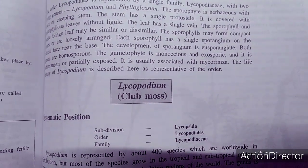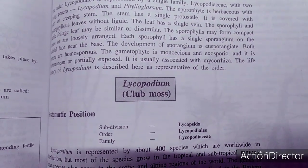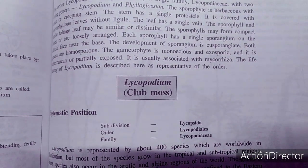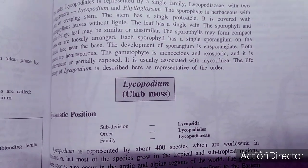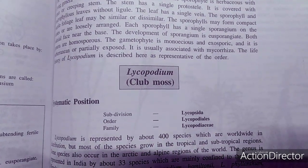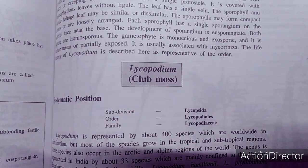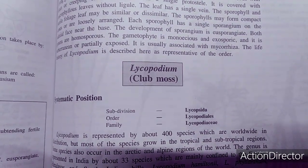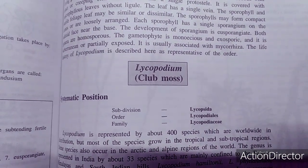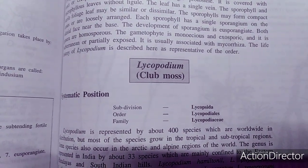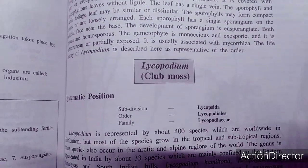The sporophyte has vascular tissue. This is a Lycophyta because the sporophyte consists of stem, root, as well as leaves. The leaves are very small in comparison to the stem, so this is a microphyllous condition. Each sporophyll has a single adaxial sporangium, and sporophylls are borne in the strobilus. It is a Lycopodiales member because homospory is present — it produces only one type of spore.